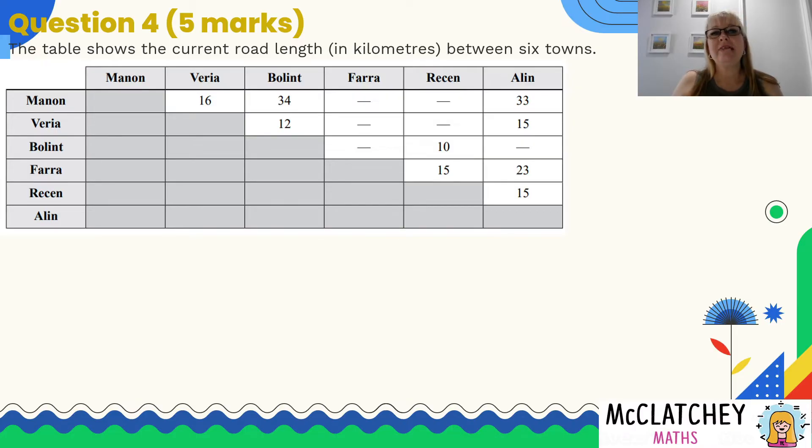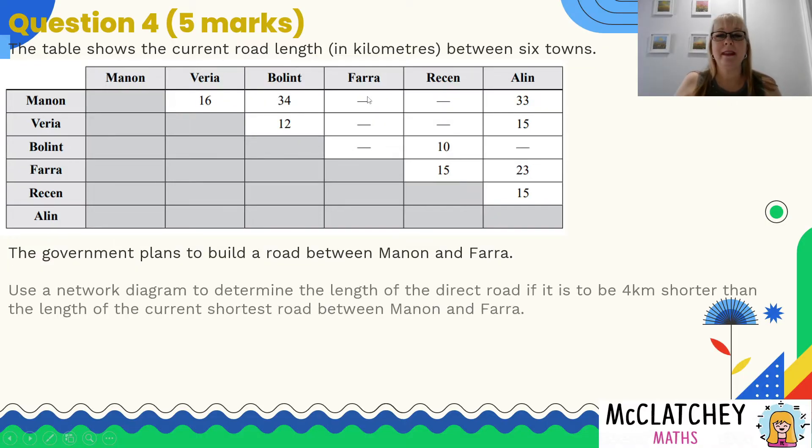It's worth five marks. The table shows the current road length in kilometers between six towns. The towns are unfamiliar names, don't worry too much about that. The question is asking us and telling us that the government plans to build a road between Manon and Farrah. Now you can see Manon here, and at the moment there's no road between Manon and Farrah. There's no distance between the two, but we're going to be building one, and they want us to create a network diagram that will determine the length of the direct road if it is to be 4 kilometers shorter than the length of the current shortest road between Manon and Farrah.